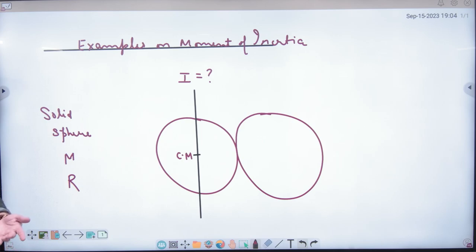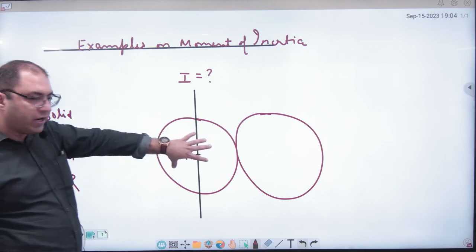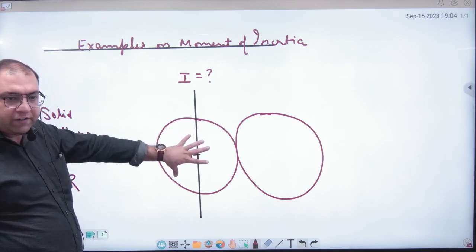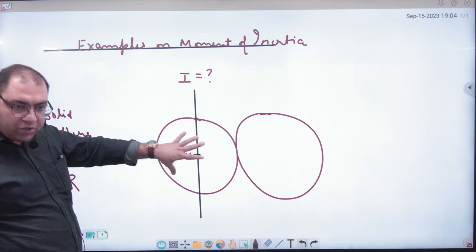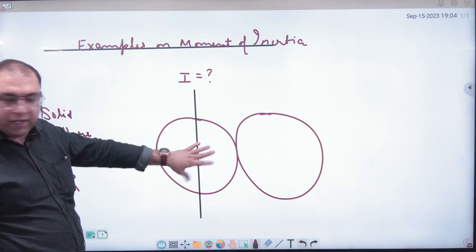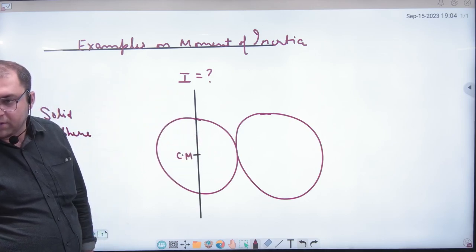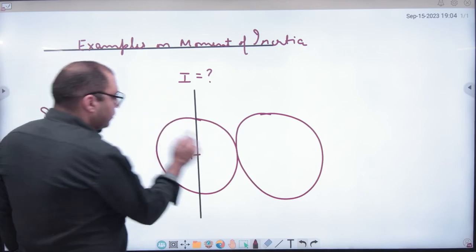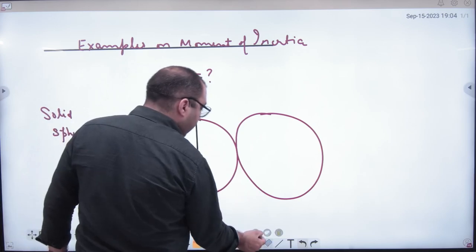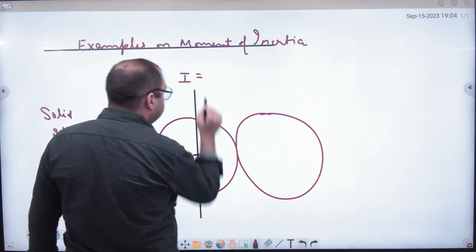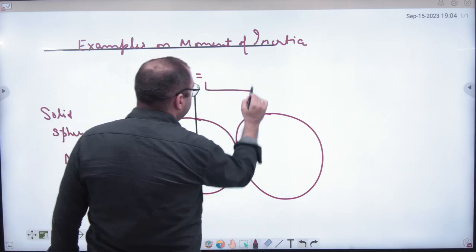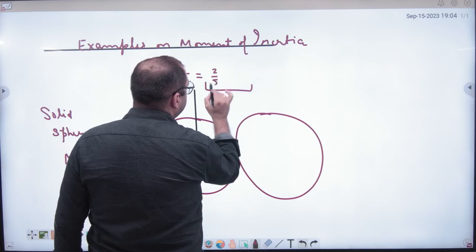When there are two bodies, we will start with them. The first solid sphere — what will be its contribution? The moment of inertia about the axis passing through its center is 2/5 mr².